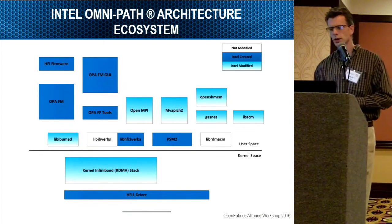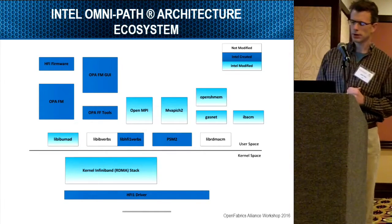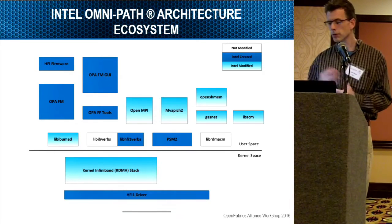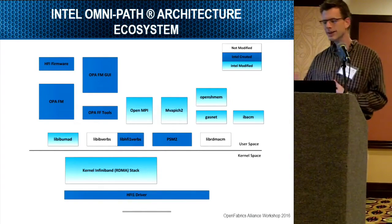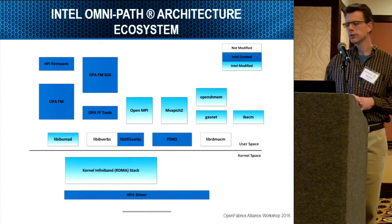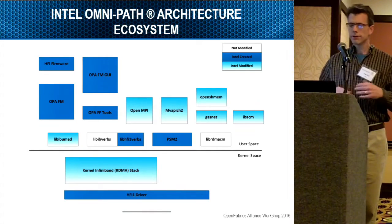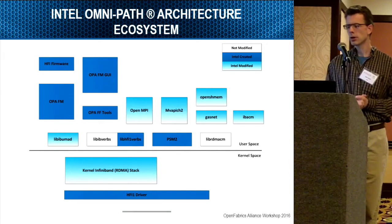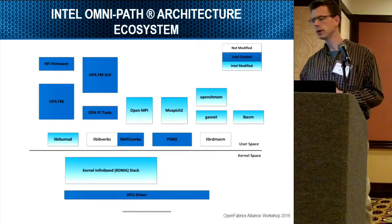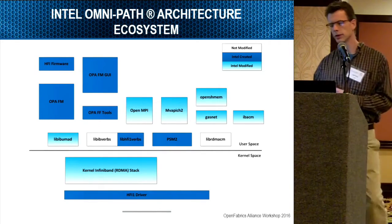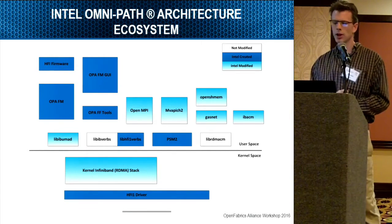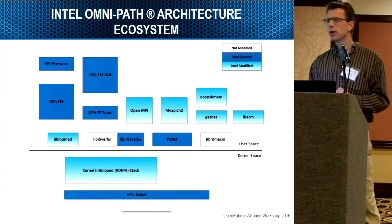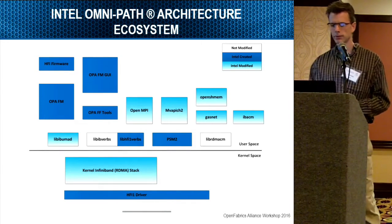This is a picture of the ecosystem. It's very close to the InfiniBand ecosystem. In this diagram, the dark blue pieces are elements which we have created, the light blue are elements which we've enhanced to support the OmniPath fabric, and the white pieces are things we've not modified. I'd like to highlight here that LibIB Verbs, LibRDMA-CM, and LibIB-MAD — we have not modified. We've worked with what's there.